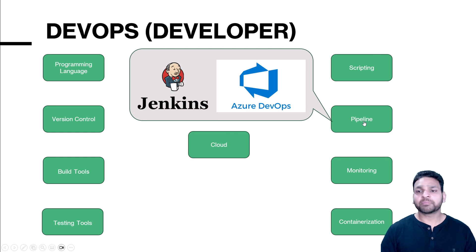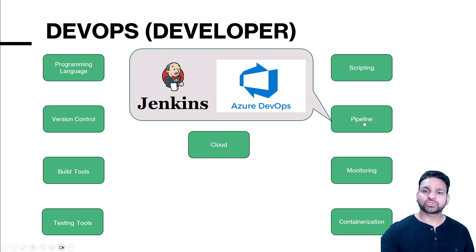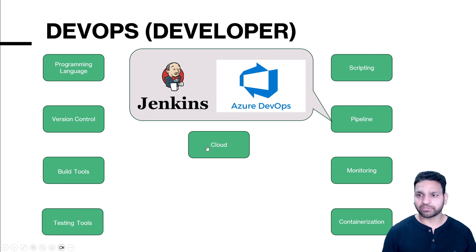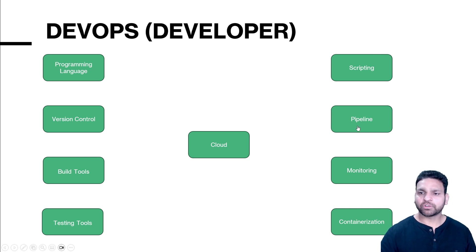Next is the pipeline. You need to set up continuous integration and continuous deployment pipelines. There are multiple options like Jenkins, GitLab, Azure DevOps, and AWS CodeCommit. You don't need to learn everything — just learn one and become good at it. If you've chosen Azure cloud, I'd recommend using the Azure DevOps pipeline. Once you're good at it and depending on projects, you can then learn Jenkins or GitLab. But first, focus on one technology.